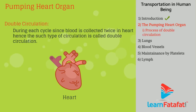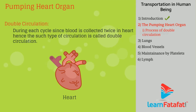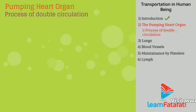During each cycle, since blood is collected twice in the heart, this type of circulation is called double circulation.